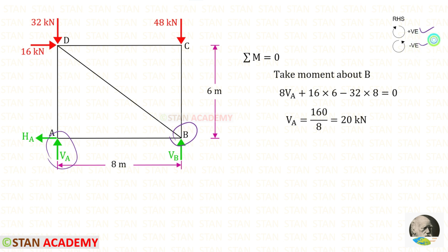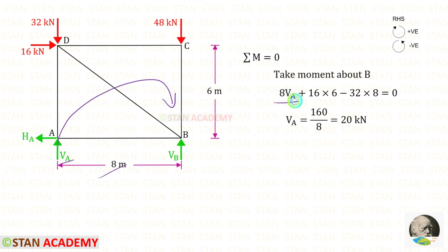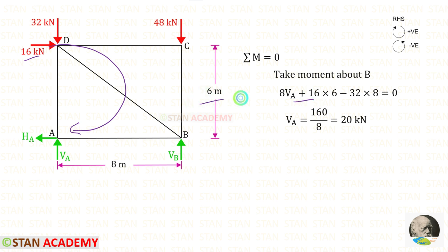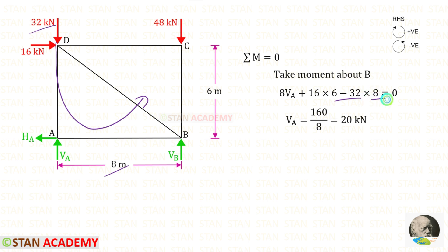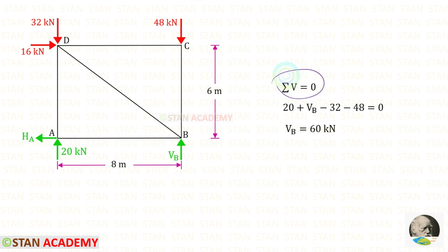First I am going to find the vertical reaction Va. For that I am going to take moments about B. Let us keep clockwise as positive and anti-clockwise as negative. Va is acting in the clockwise direction so it will be positive, and the distance is 8, so 8·Va. The 16 kN load is acting in the clockwise direction so it is also positive, and the distance is 6. The other load is acting in the anti-clockwise direction so it will be negative, and the distance is 8. For the remaining load there is no perpendicular distance so we do not take it. For Va we will get 20 kN.